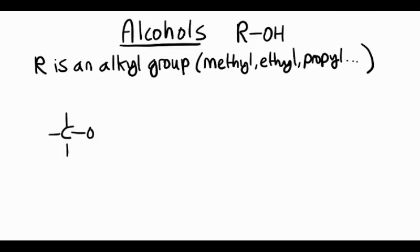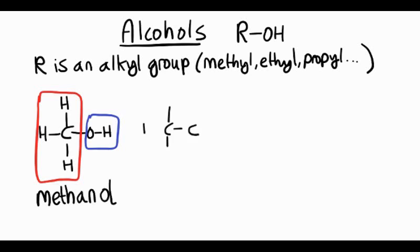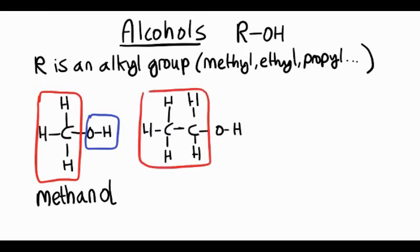For example, if there was just one carbon, our alkyl group would be methyl, and then you have an OH, so we call it methanol. Or if there were two carbons we'd have an ethyl group, stick it to an OH, and we'd have ethanol.